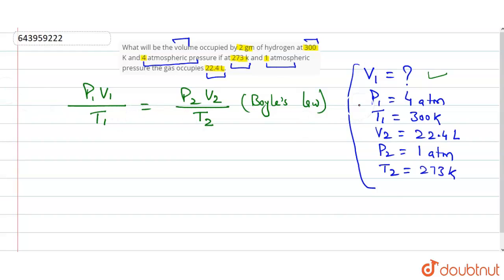So if we start putting the values in this equation, we have P1 is 4, and V1 we have to find, so I will write it V here in place of V1. What is T1 here? T1 is 300. P2 is 1 atm, and V2 is 22.4, and T2 here is 273.